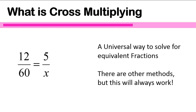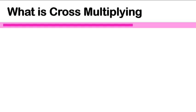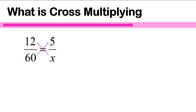If you want to learn just one method and be able to solve all equivalent fraction problems, this is the method that you want to do. So let's look at what cross-multiplying is and how it works. Here's an example. If I have 12 over 60 is equal to 5 over x, I'm going to do cross-multiplying. That means I multiply the numbers that are across from each other — kitty-corner, on diagonals — whatever word you like.